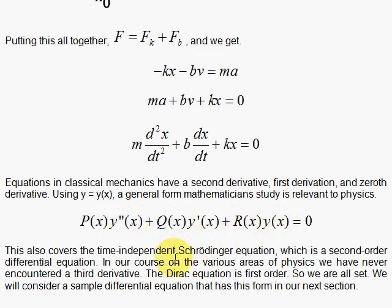And also the Schrödinger equation is a second order differential equation. We have the second derivative of the wave function with respect to x. So this is covered, and we don't go to any third or fourth derivatives. We have encountered that in our laws of physics that we've looked at here.